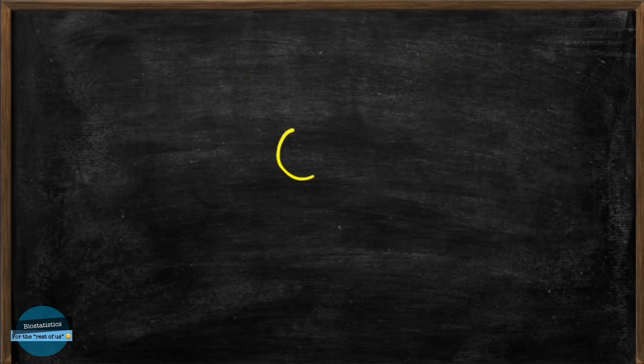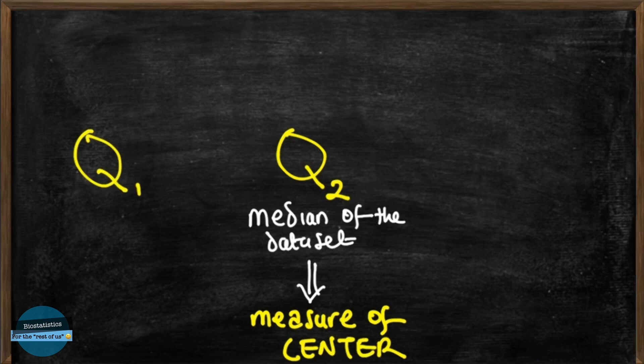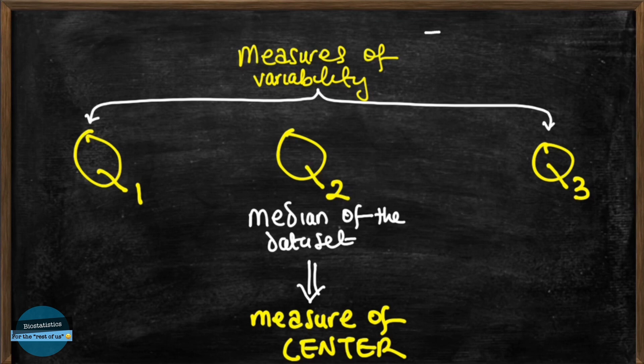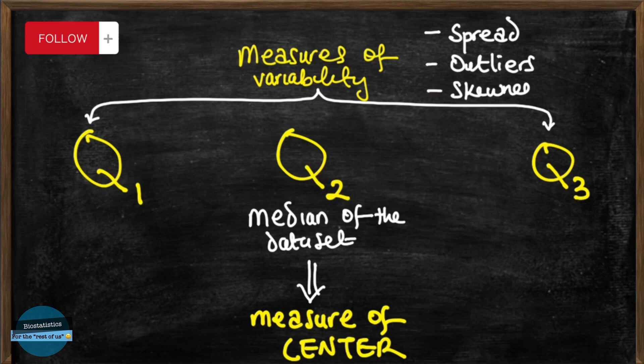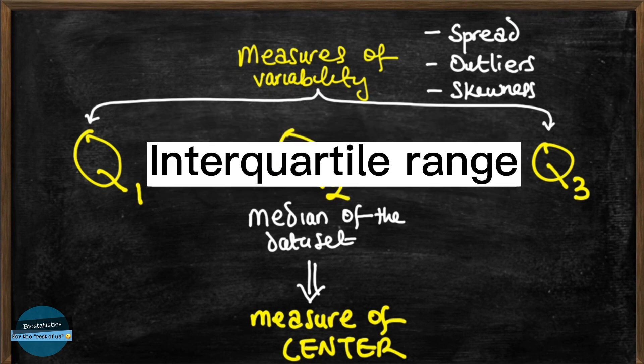Now you will notice that Q2 is the median of the data set so we can say it's a measure of center. While Q1, which is the first quartile and the third quartile, Q3, are measures of variability. They help us to measure the spread of the data as well as to identify outliers and the skewness of the data. The distance between Q1 and Q3 is called the interquartile range and this is another measure of variability which we'll be discussing in our next video.